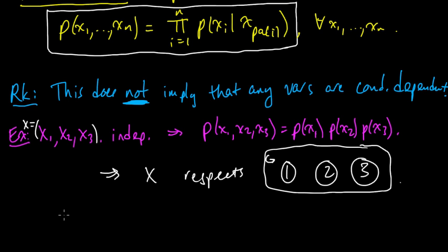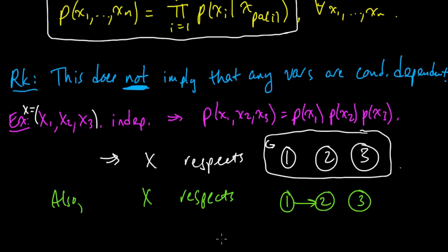But also, switch colors, x respects, we could also add some edges. We can add any edges we wanted. If we say we add this edge. Well, we need it to still satisfy this, so we would need probability of x2 given x1, we would need this factor to be equal to this factor. We would need that to be equal to the probability of x2.